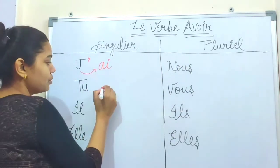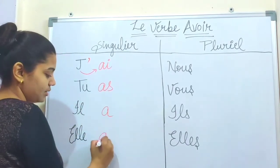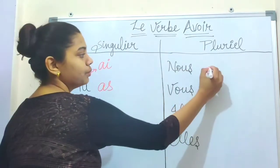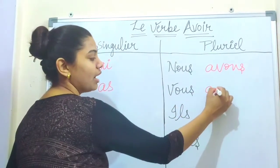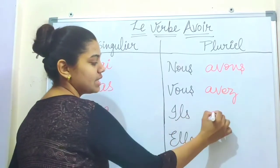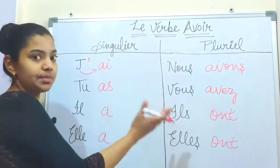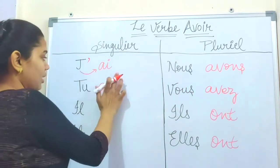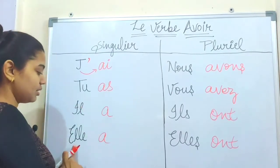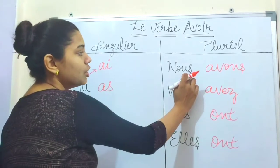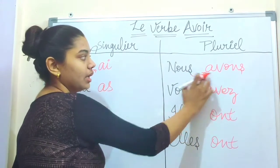So j'ai, tu as, il a, elle a, nous avons. With nous avons, we are merging the sound — the 's' of nous links with the 'a' of avons.